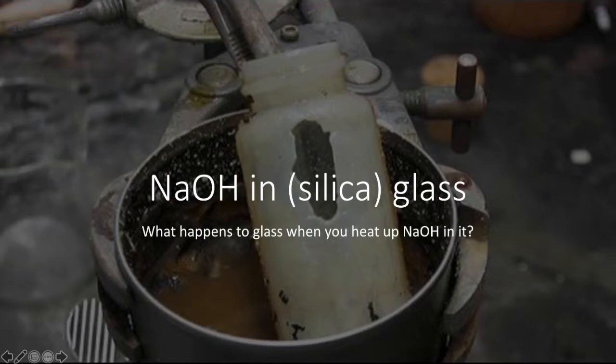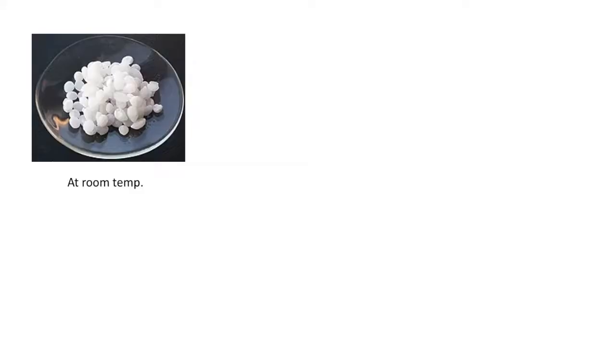This presentation is about what happens to glass when you mix it with sodium hydroxide and heat it up. Sodium hydroxide, also known as caustic soda or lye, is a metallic base that at room temperature is a white crystalline odorless hygroscopic solid.